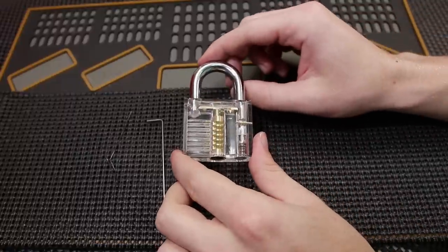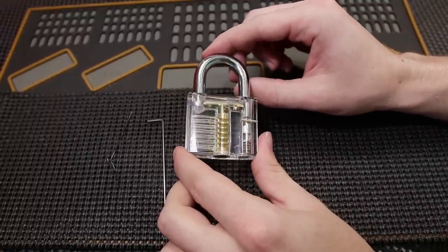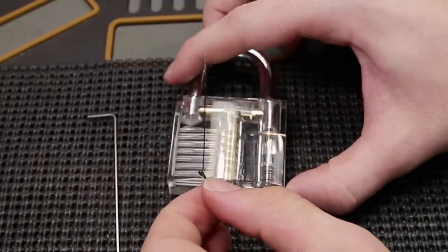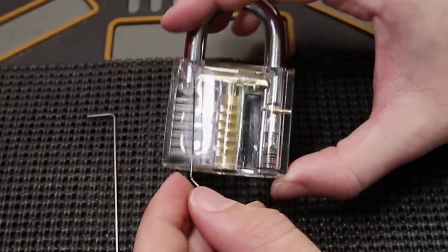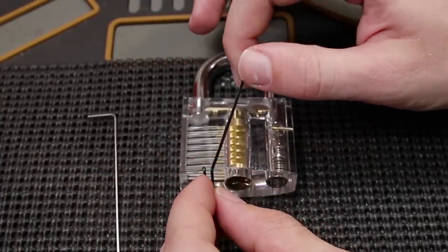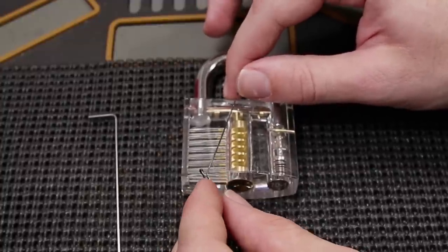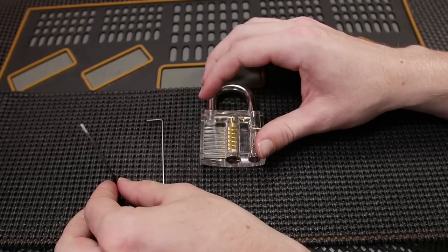So to start to summarize, yes, you can absolutely get locks open just using a bobby pin. However, I do not find them to be the most reliable tool. The tension wrenches snap very easily, and they do not provide the best feedback.